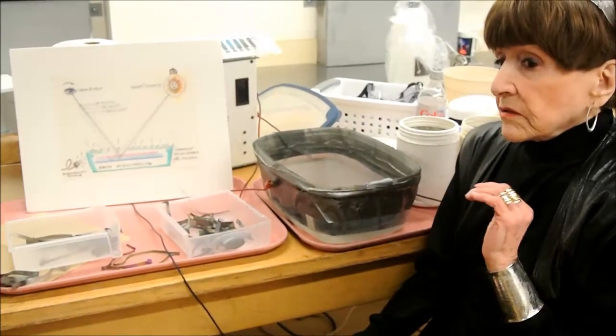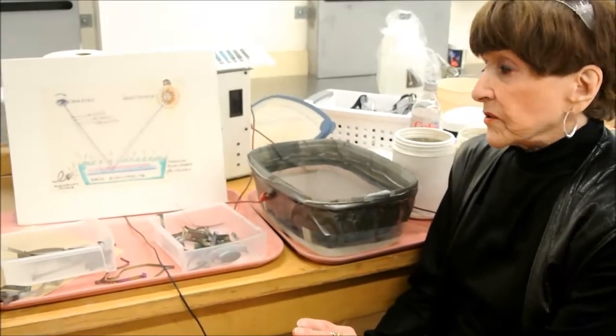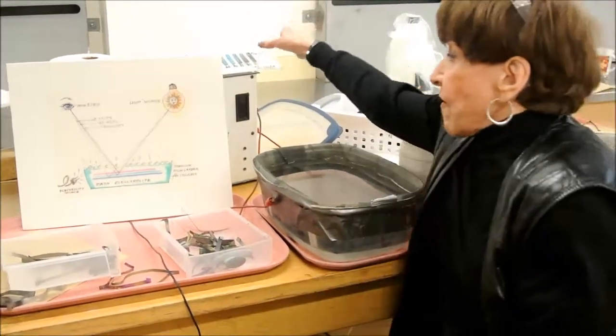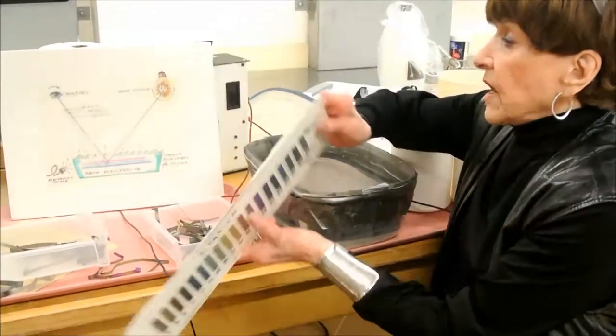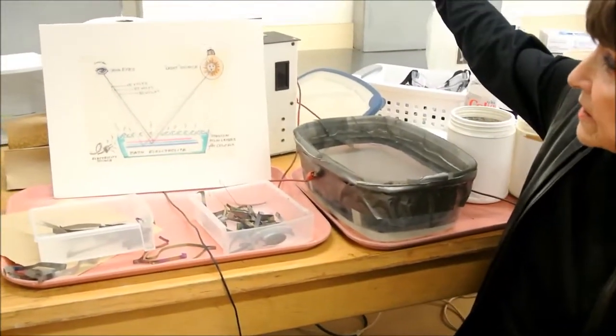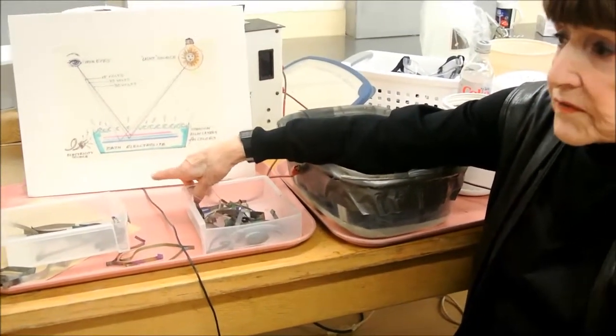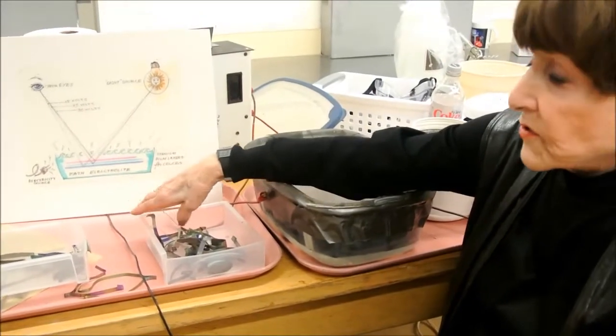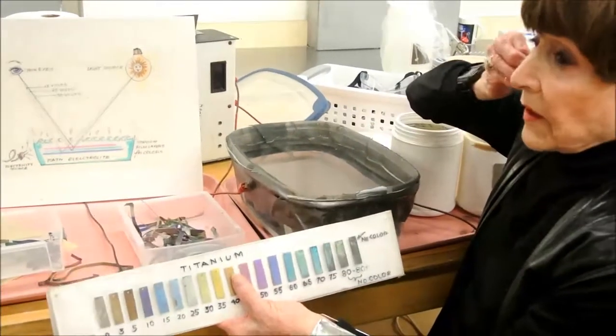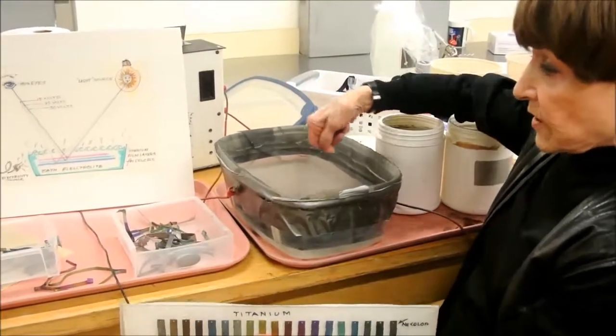Each film layer is what we consider a number of voltages. When the eye sees an oil slick based on the way the sun is striking it, we see down through each of the levels of the depth of the oil or the depth of the oxide film that's on the metal when it's going through the electric bath.